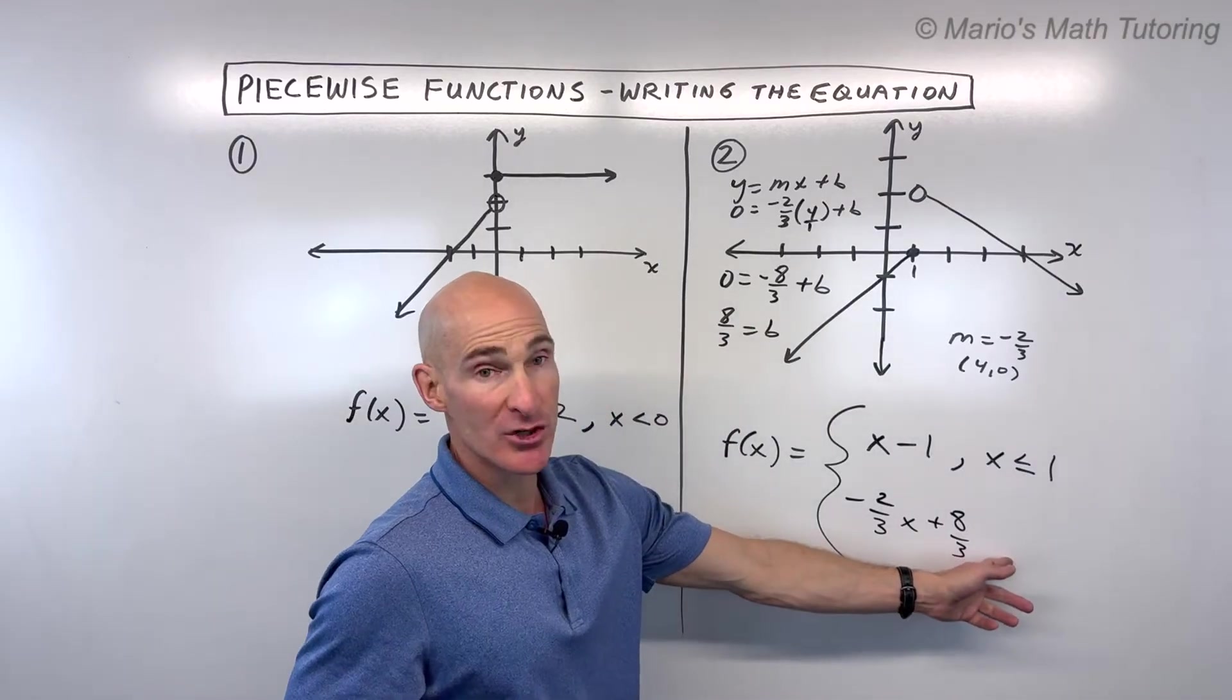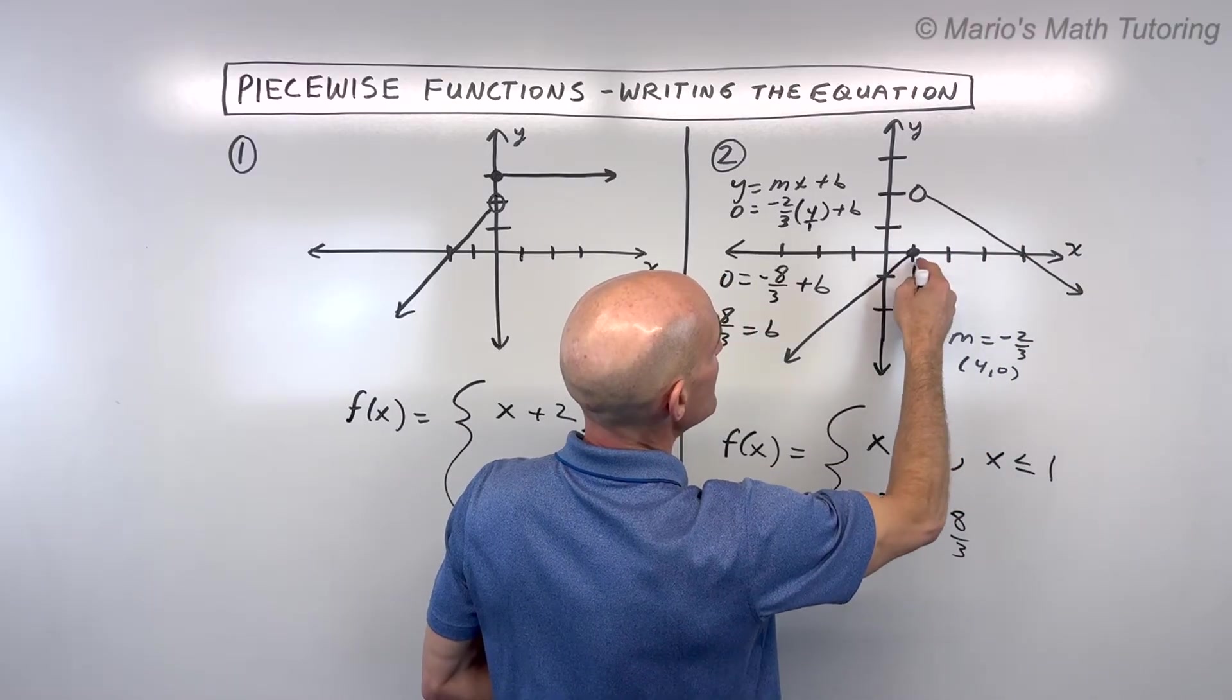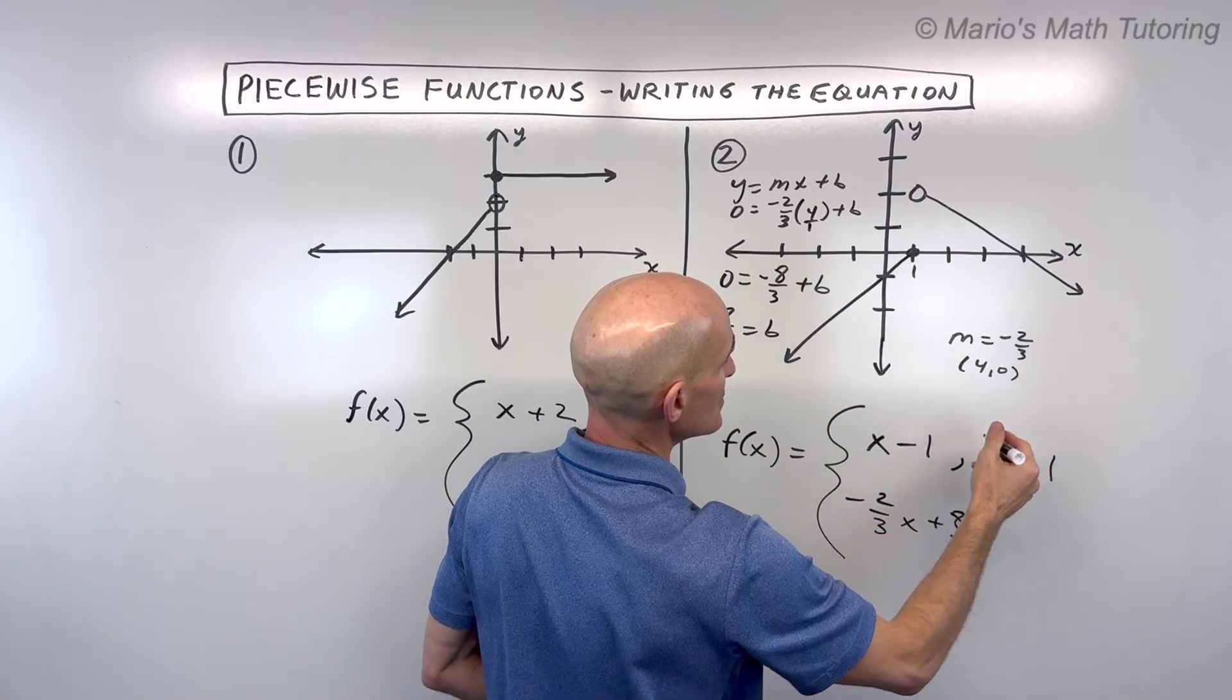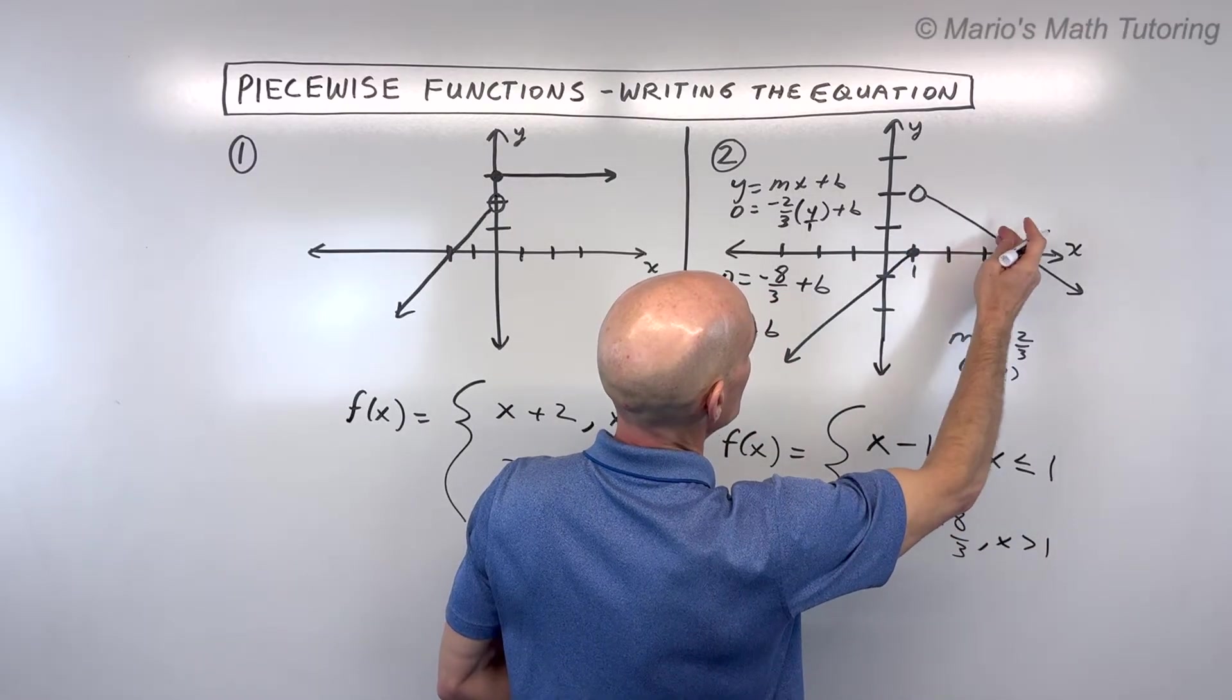But now let's put our restriction. So our restriction is when x is to the right of 1. We don't want it to equal 1 because this is hollow or empty, so it's greater than 1, meaning to the right of 1 you're on this graph.